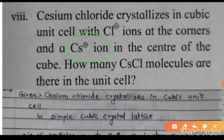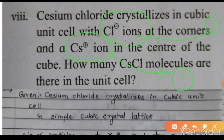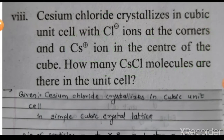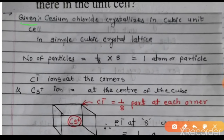The Cs⁺ ion is at the center, so one particle of Cs⁺ is present, and one particle of Cl⁻ is present. Therefore, there must be only one cesium chloride molecule in this unit cell.